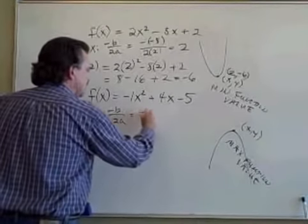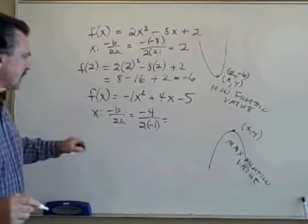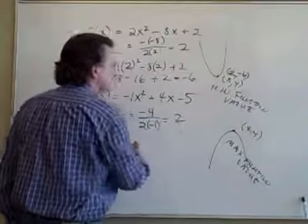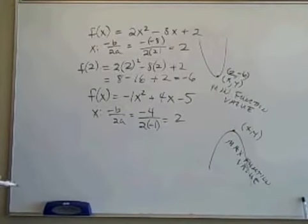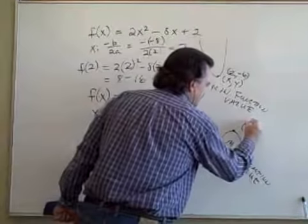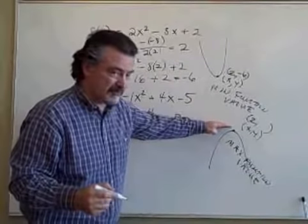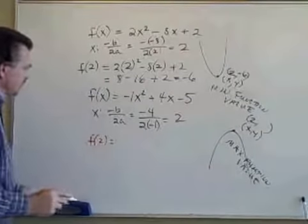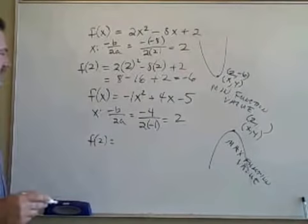We find the x part of the vertex by taking negative b over 2a, which in this case would be negative 4 over 2 times negative 1 — that's negative 4 over negative 2, which is also 2. That was interesting, especially since I just made those two problems up — I somehow hit upon the same x value for the vertex. So the x value of the vertex, which is where the maximum function value occurs, is 2. We find f(2) for this function to get the y value at the vertex.